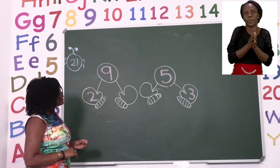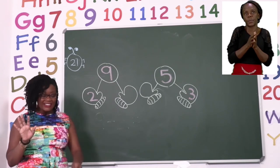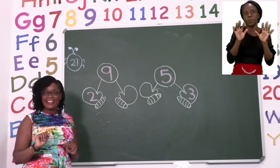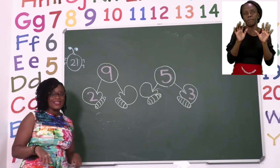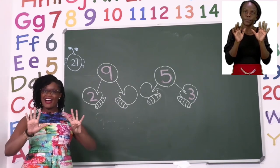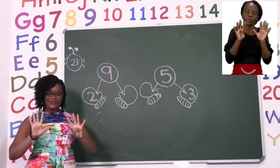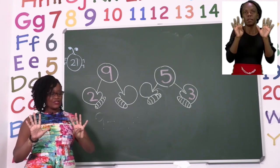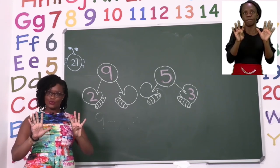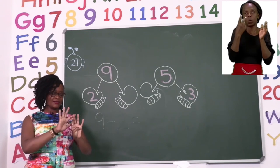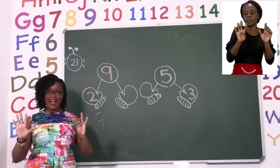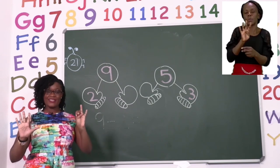So we are going to use our fingers so that we can get the correct answer. Let's now show nine fingers. Very good. Now I want you to take away two. One, two.